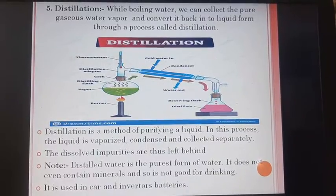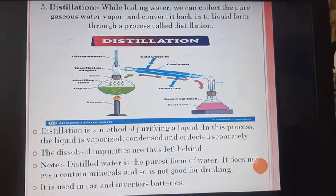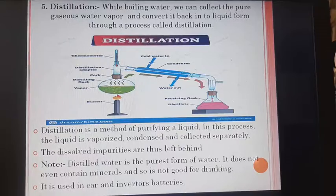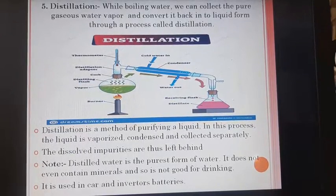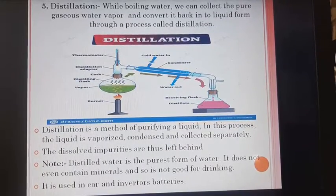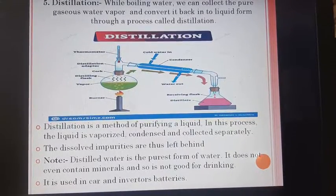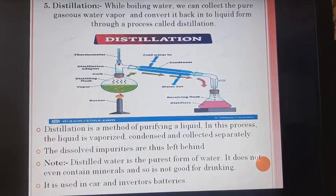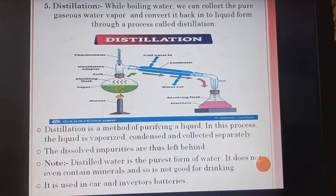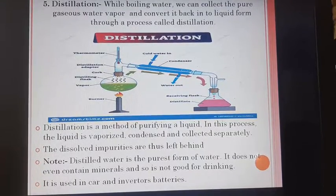Fifth, distillation. While boiling water, we can collect the pure water vapors and convert them back into liquid form through a process called distillation. Distillation is a method of purifying a liquid. In this process, the liquid is vaporized, condensed, and collected separately. The dissolved impurities are thus left behind.